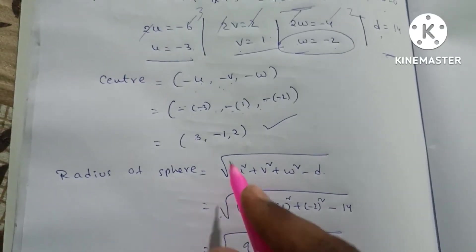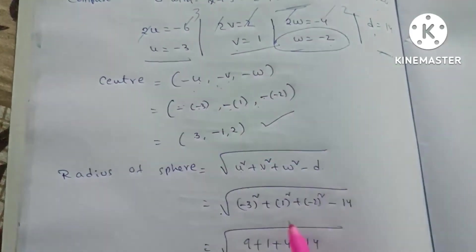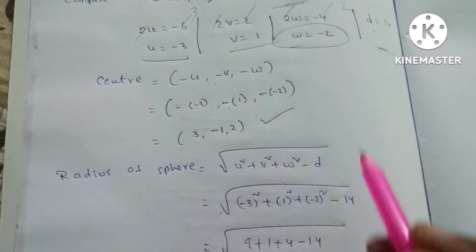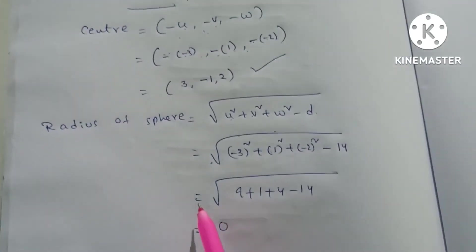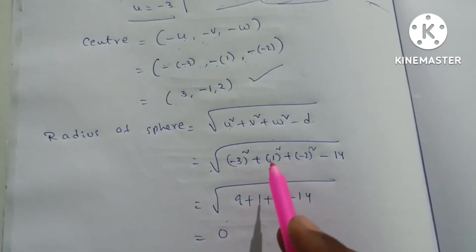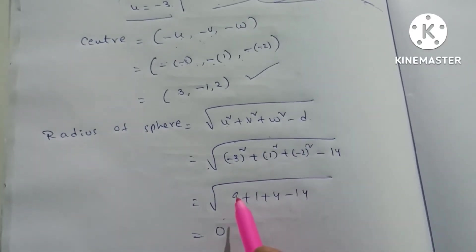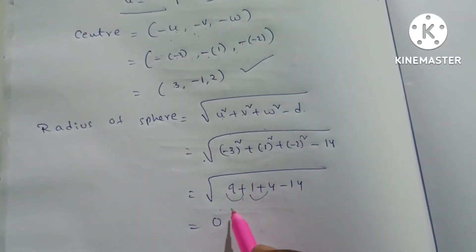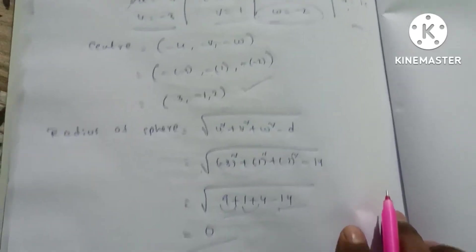So, radius equals root over: u equals minus 3, so (minus 3) whole square equals 9; plus v equals 1, so 1 square equals 1; plus w equals minus 2, so (minus 2) whole square equals 4; minus d equals 14. So: 9 plus 1 plus 4 minus 14 equals 0. The radius equals root over 0 equals 0. This is the solution to the problem.